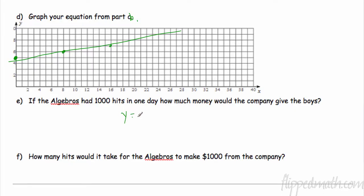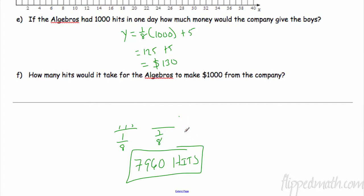All right. If the Algebros had 100 hits in a day, how much would they have? So that's use your equation: 1/8 times a thousand hits plus 5. 1/8 times a thousand plus 5 is 125 plus 5. We'd have 130 dollars.